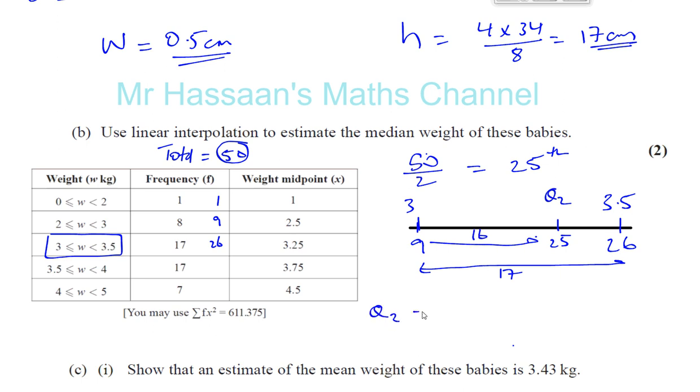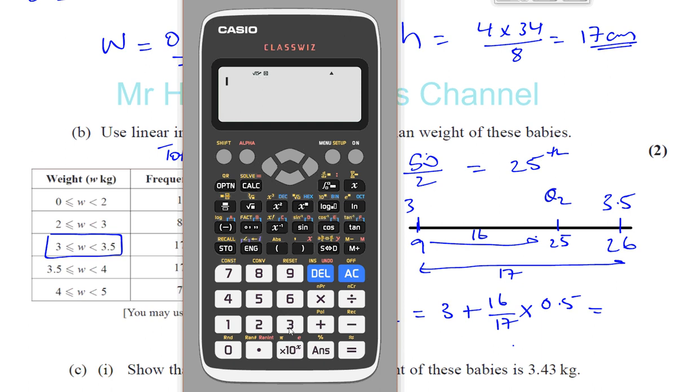So we're looking for the 25th entry, which is 16 entries along. So we can say that the median, which is called Q2, is equal to 3 plus something more than 3. But it's this fraction, which is 16 17ths of the width of this bar, which is 0.5. That's how far along the median is in this particular range. Because the 25th entry is 16 terms along out of 17 terms. So you make it like a fraction, a proportion.